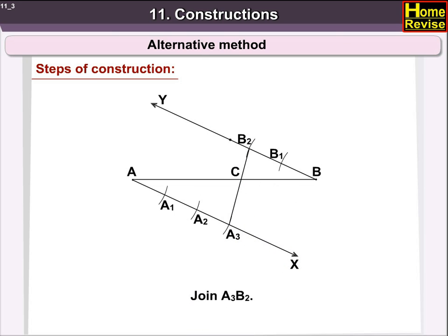Join A3B2. Let it intersect AB at a point C. Then, AC is to CB is equal to 3 is to 2.